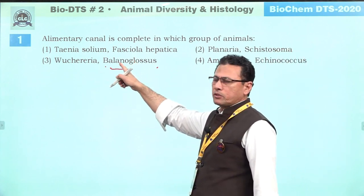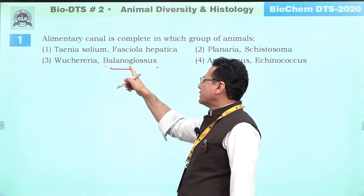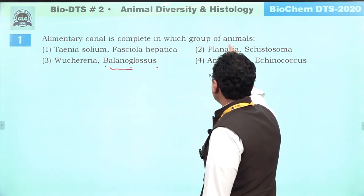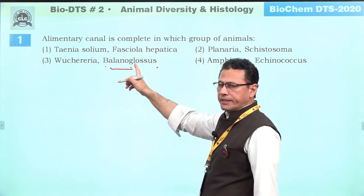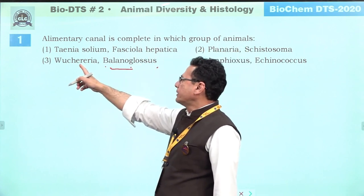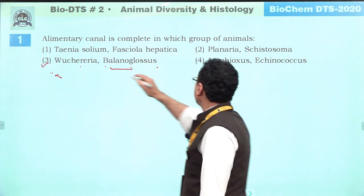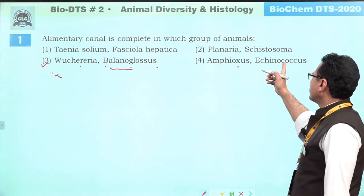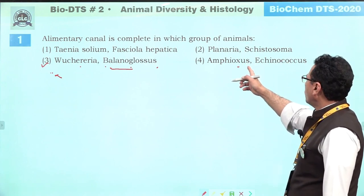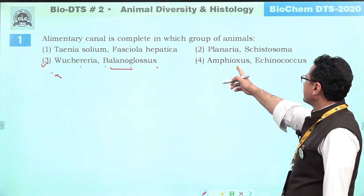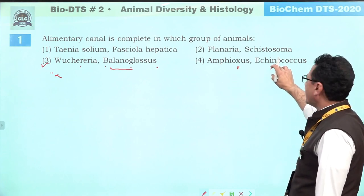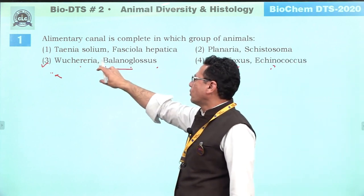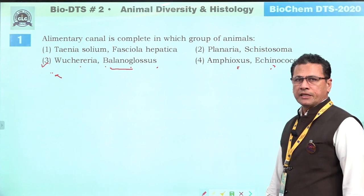Both are from phylum Aschelminthes, in which the alimentary canal is complete. Hemichordate and helminth — in both the alimentary canal is complete. Amphioxus is a cephalochordate. Echinococcus granulosus is a helminth, a Platyhelminth. So the alimentary canal is complete in both of these.